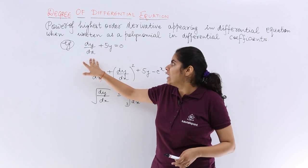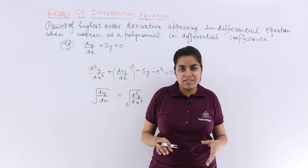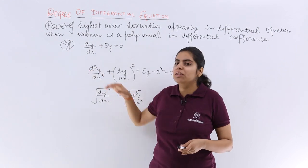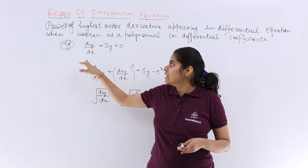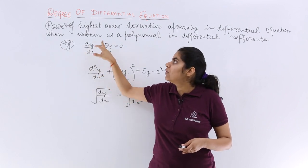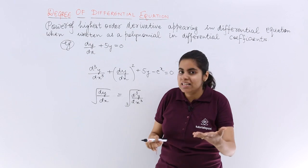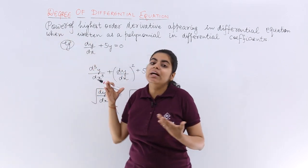Let's see this example number one: dy/dx + 5y = 0. Now what is it like? It has only one differential coefficient and that is dy/dx. Now this is the first step, that highest order derivative you have found out.